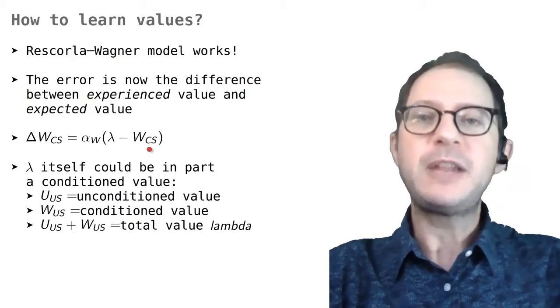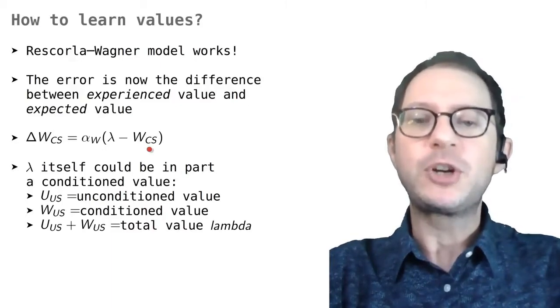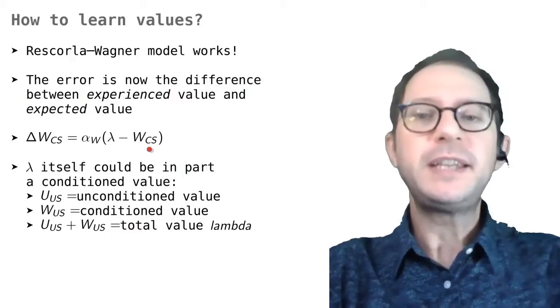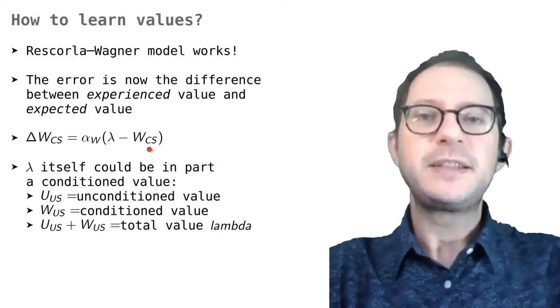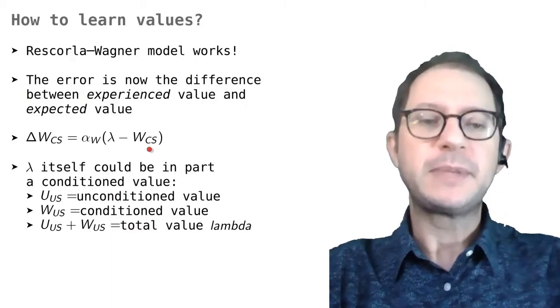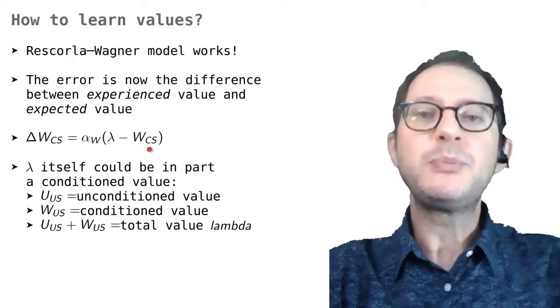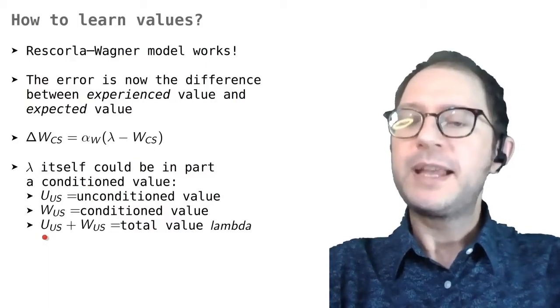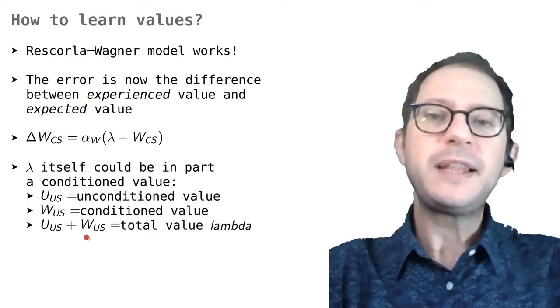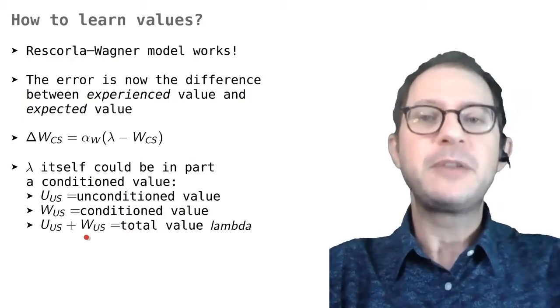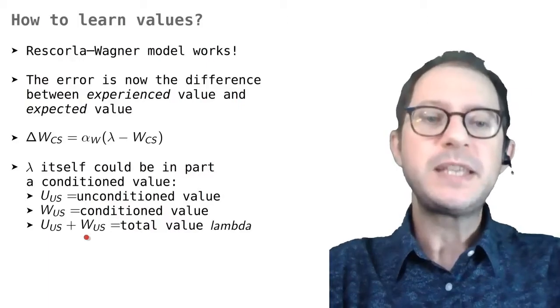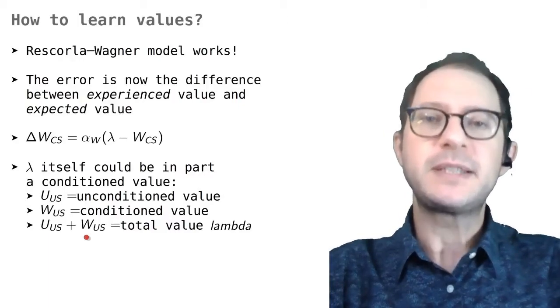The last thing I want to mention is that the value of a US can also be learned. For example, we saw in the lesson on conditional reinforcement that dogs don't innately value meat, but they learn that it is a valuable stimulus by experience. So, what Rescorla-Wagner called lambda can actually be split into two parts. One that we can call U, and it is the unconditioned part of the value, and one that we have called W, and that is the learned part of the value of the US. All together, they make up the value lambda. We will see why this is important in the lesson on learning sequences of action.